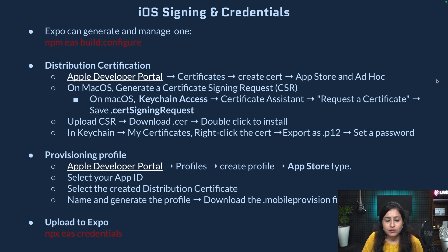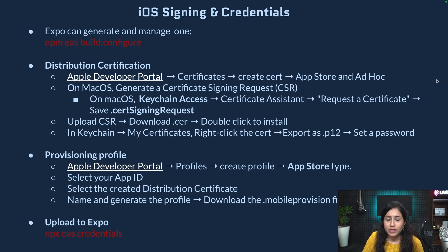Expo has just one command to manage credentials much more easily, which is EAS build configure. Obviously, we need to authorize the Apple developer portal via Apple login on the command line. If it finds any previous signing certificates, it will reuse them; otherwise, it will create new ones. The same applies for the provisioning profile as well. Basically, Expo manages everything with just one command.